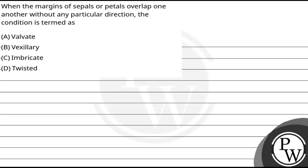Let's read the question. When the margins of sepals or petals overlap one another without any particular direction, what do we call that condition? The options are: A) valvate, B) vexillary, C) imbricate, and D) twisted.